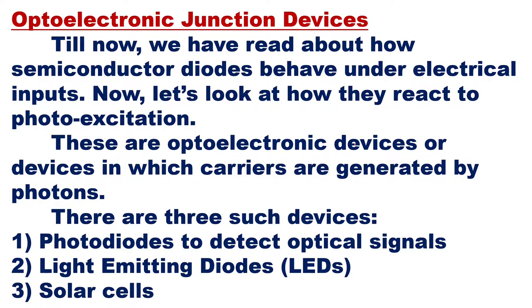Let us start with optoelectronic junction devices. Till now we have read about how semiconductor diodes — p-n junction diodes — behave under electrical inputs. We have seen forward bias and reverse bias connections and how this semiconductor diode behaves under the influence of electric voltage. Now let us look at how they react to photo excitation — that means when light falls on it, what is the effect on that semiconductor device. These are called optoelectronic devices.